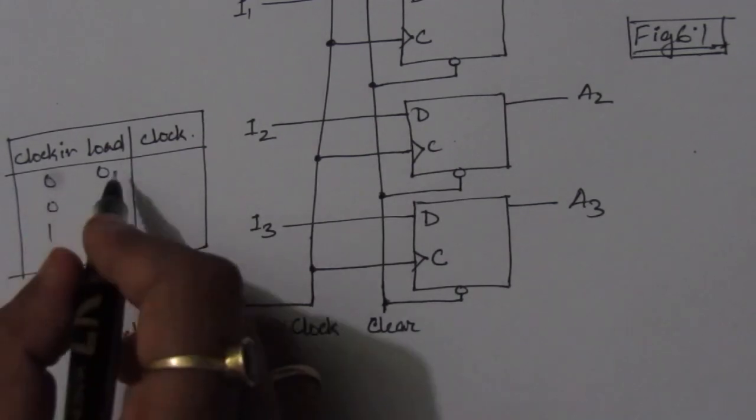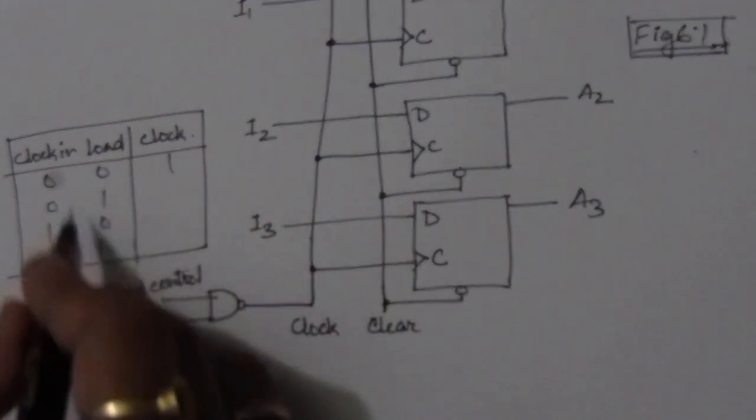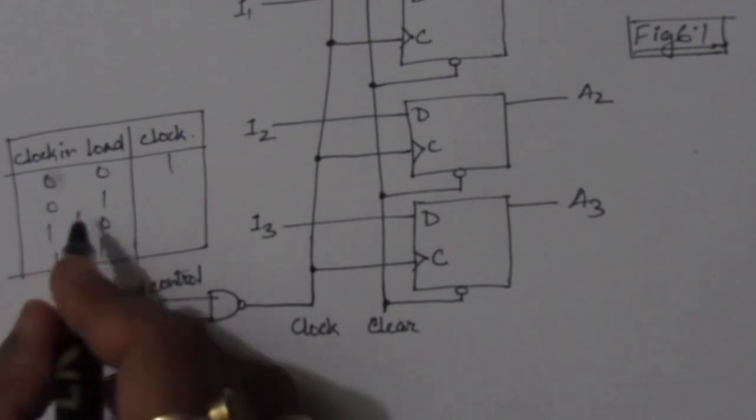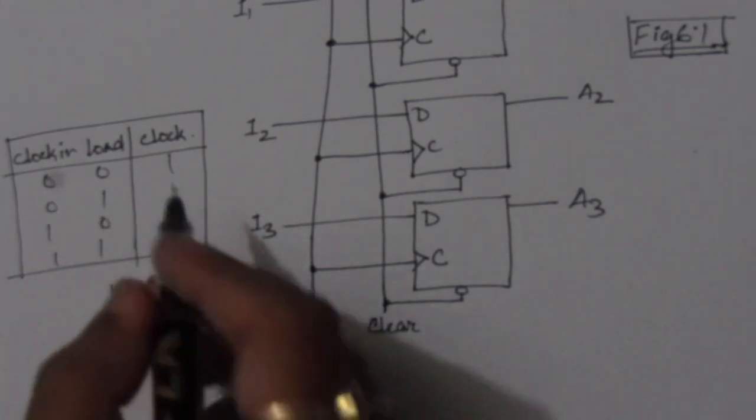So whenever we have 0, 0, the NAND output will be 1. That means whenever we have any one of the input, of these two inputs will be 0, the output will be 1.